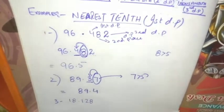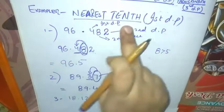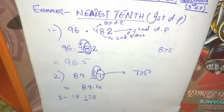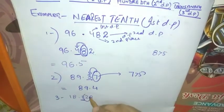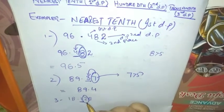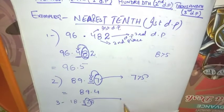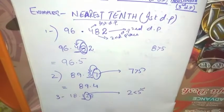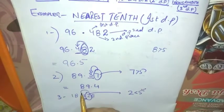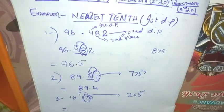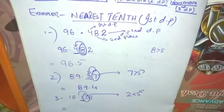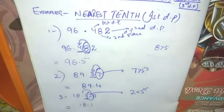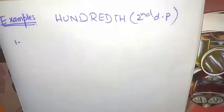The third example is 18.128, rounding to the nearest tenth, first decimal place. We underline this digit and circle the next digit. We see this digit is less than 5 — five is greater than this digit — so we cannot add 1 to this digit. The rounding of the number to the nearest tenth becomes 18.1. This is the rounding of the first decimal point.